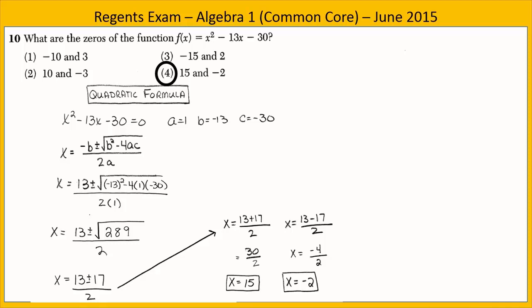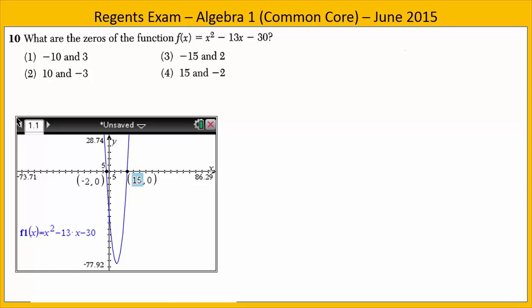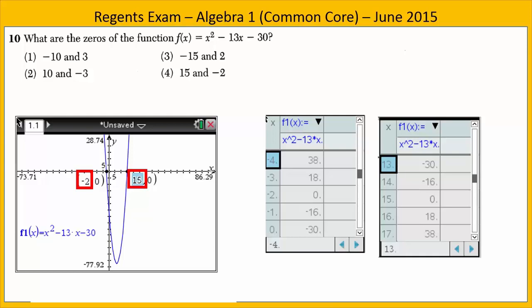Another option is to look at the graph. Put the function in your graphing calculator and find the zeros. We see a zero at (negative 2, 0) and a zero at (15, 0), so negative 2 and 15 are the zeros. You could also look in the table — at x equals negative 2 the output is zero, and at x equals 15 the output is also zero. Again, choice 4.